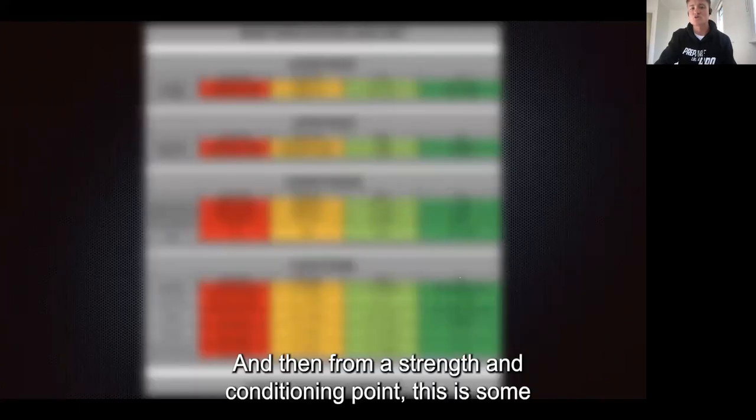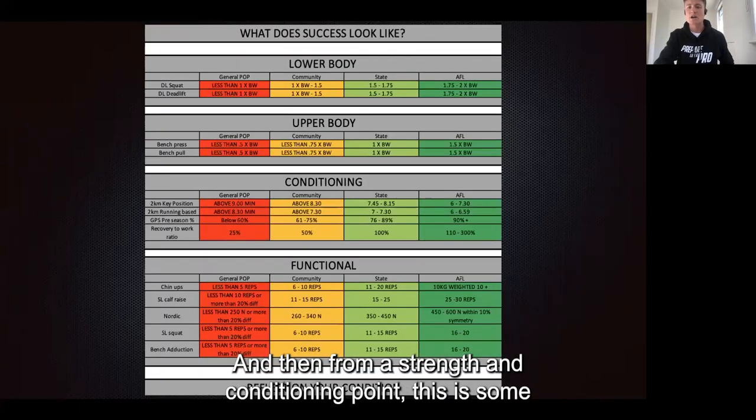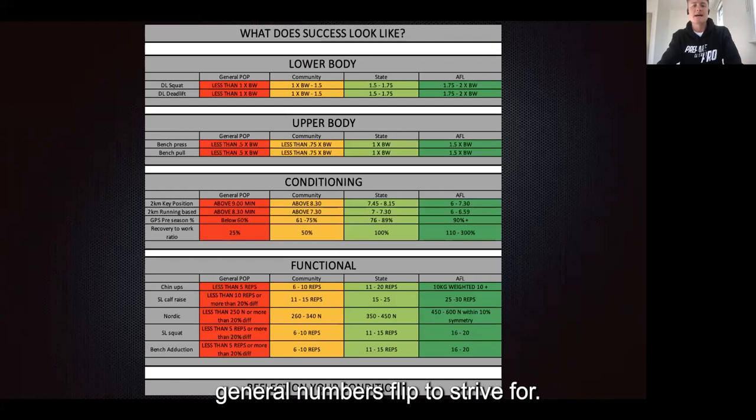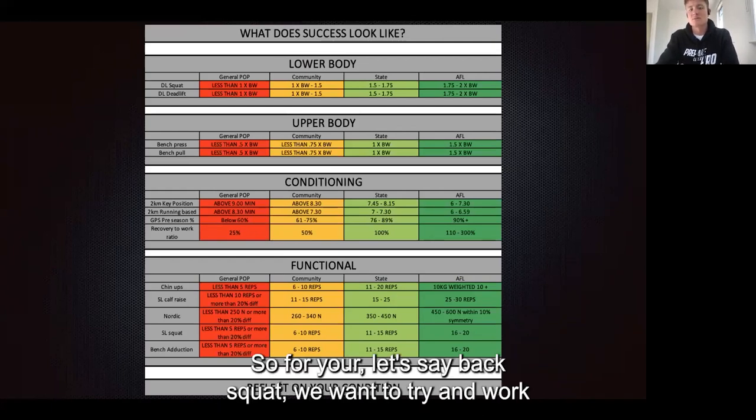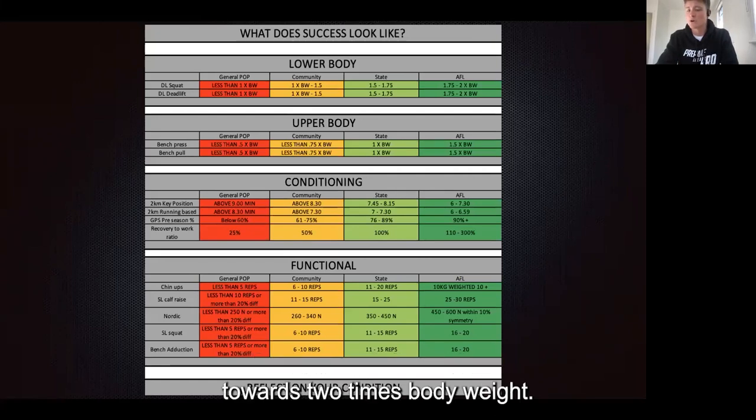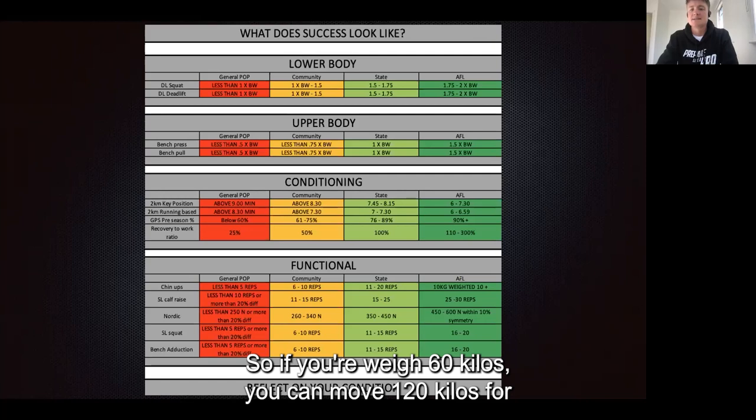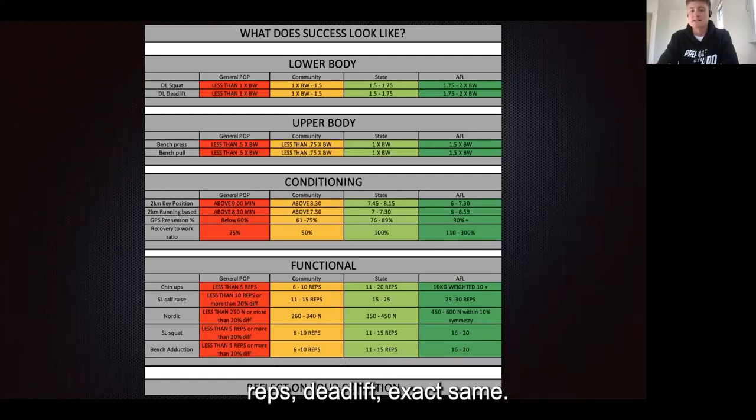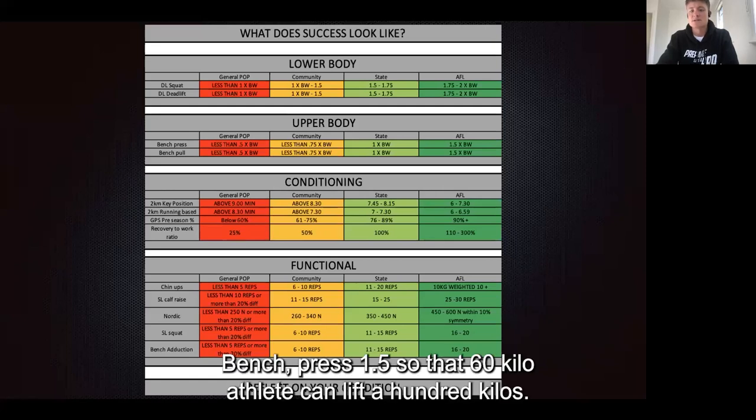Then from a strength and conditioning point, this is some general numbers to strive for. For your back squat, we want to try and work towards two times body weight. So if you're weighing 60 kilos, you can move 120 kilos for reps. Deadlift, exact same. Bench press, 1.5. So that 60 kilo athlete can lift 100 kilos.